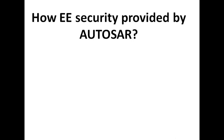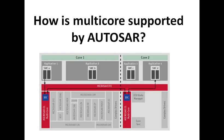How is security provided in AUTOSAR? When there is an inter-issue communication — communication happening between one ECU and another ECU over the CAN bus — how is the security maintained? Basically, there are different techniques used to provide end-to-end security. One such example is making use of an alive counter. Whenever you are sending any data on the bus, that data is attached with an alive counter which keeps incrementing. That counter is checked at the receiving end as well — that's how end-to-end security is provided. There are different ways also to provide security; this is one method using an alive counter.